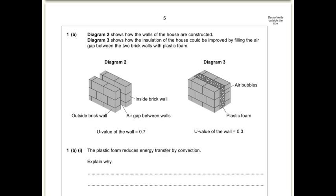Next question, 1B. You've got two walls. This one has an air gap in between it, this one has plastic foam in between it. You can see this has got a 0.7 U value and a 0.3 U value. So the plastic foam reduces energy transfers by convection. Explain why. Well, what's convection? Convection is the transfer of energy by the movement of air. In this case, what does the foam do? Well, the foam traps the air. So you're going to get one mark for saying that the air is trapped in the foam, or air bubbles are trapped in the foam. And a second mark for saying, well, then the air can't circulate, or it can't move, or there's no convection current that can be formed.